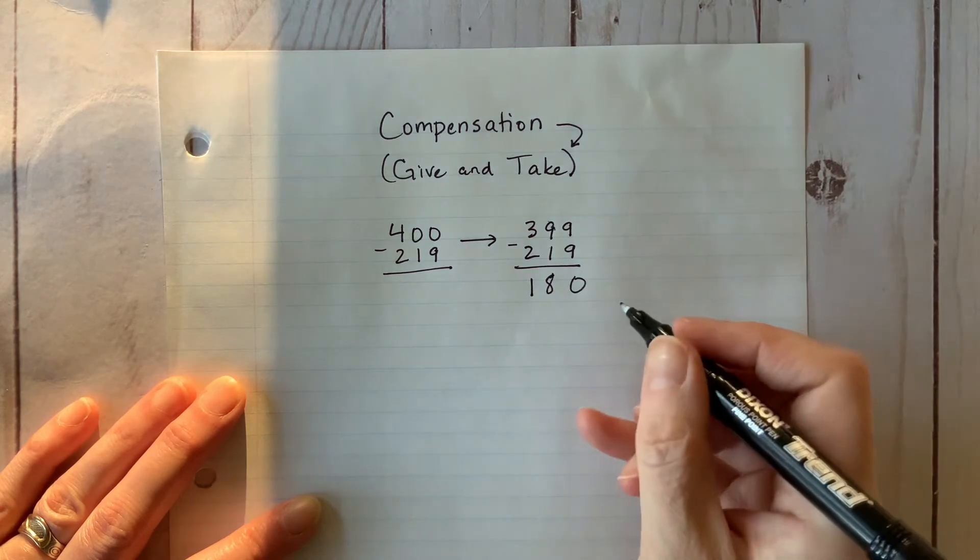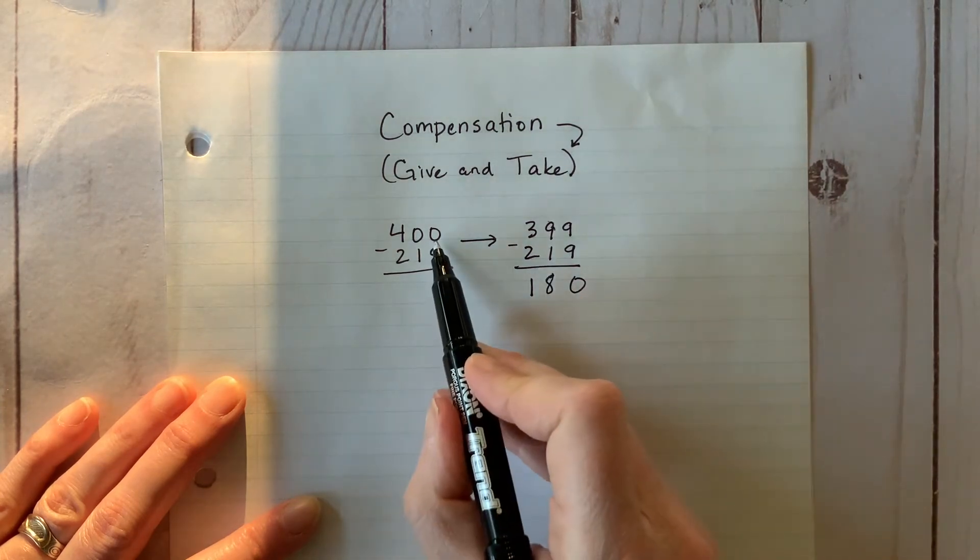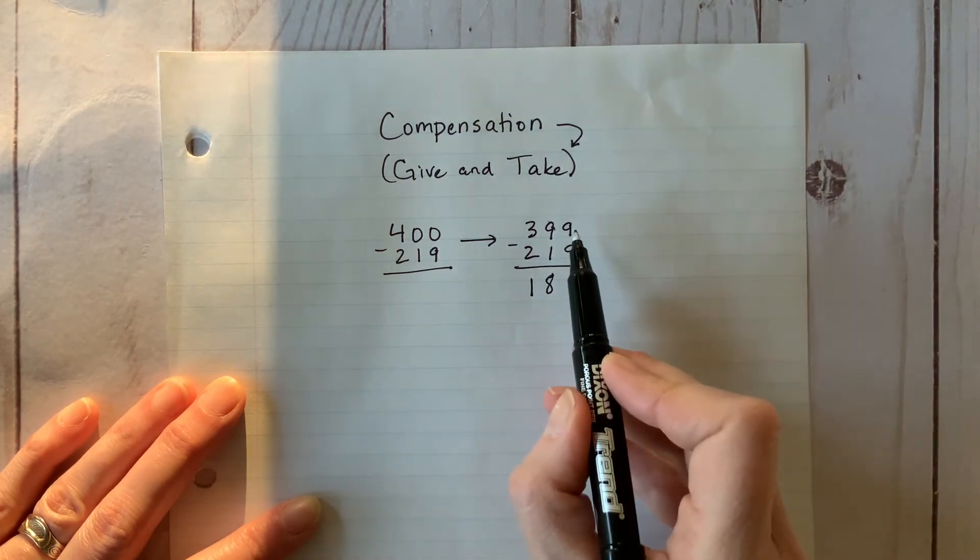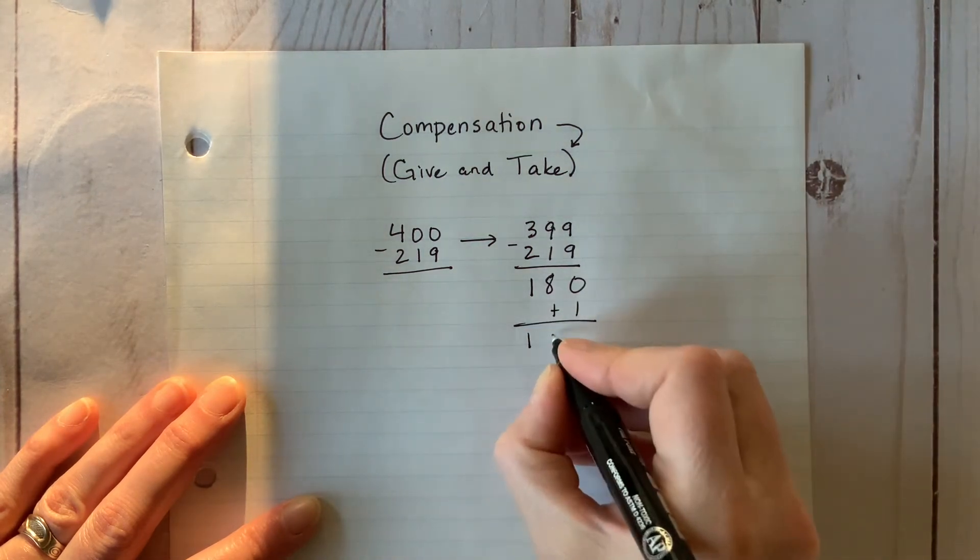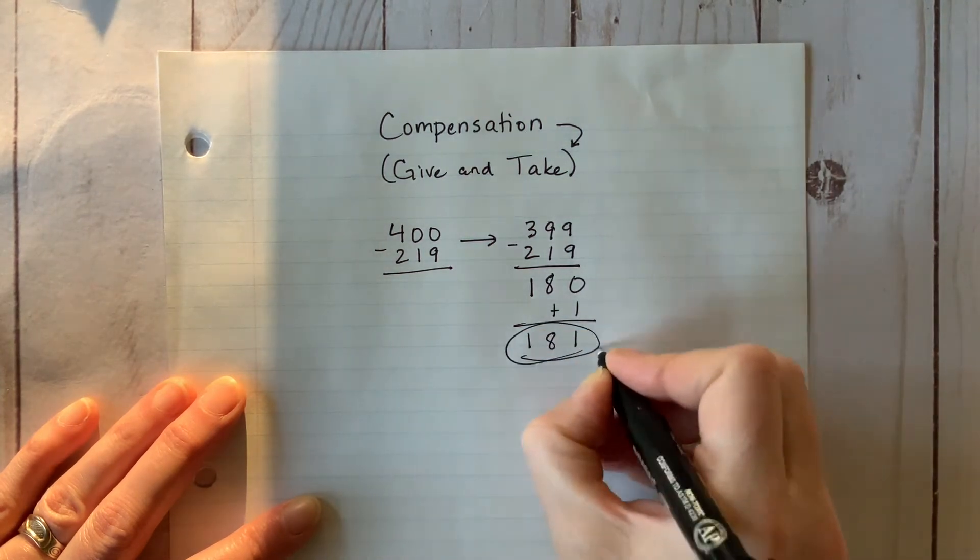With this method, you need to compensate for the fact that the difference between the two numbers is one smaller than it should be. So this time we'll add one and voila. Problem solved.